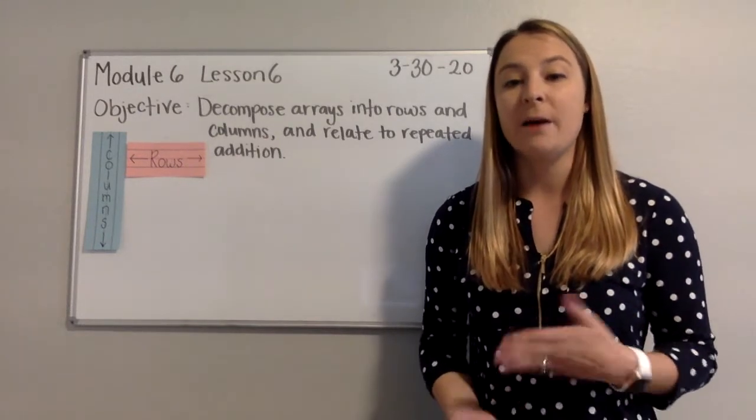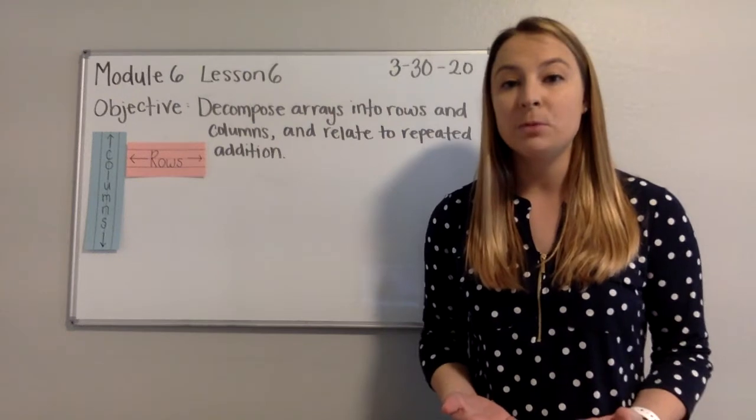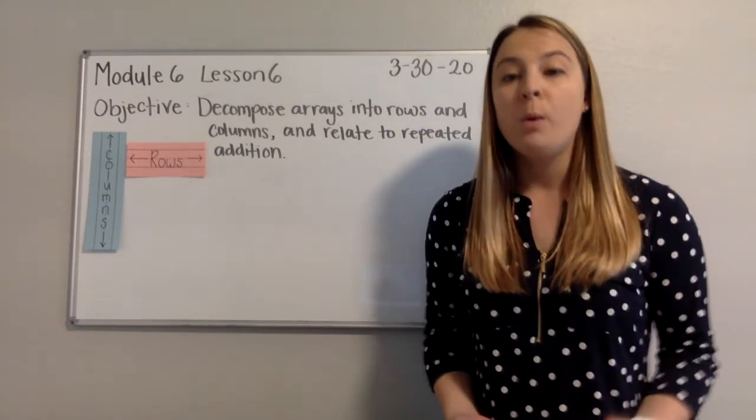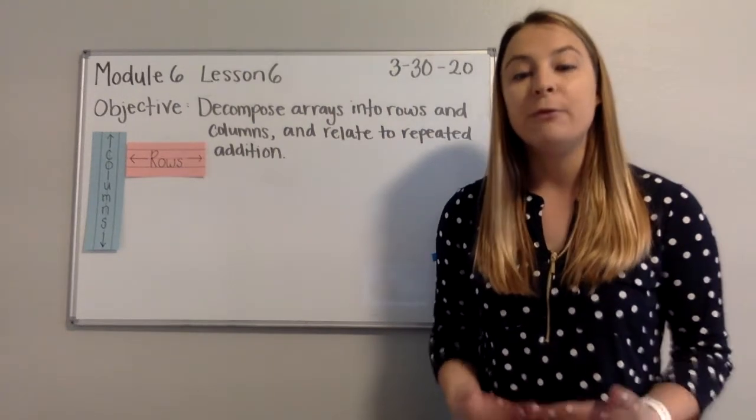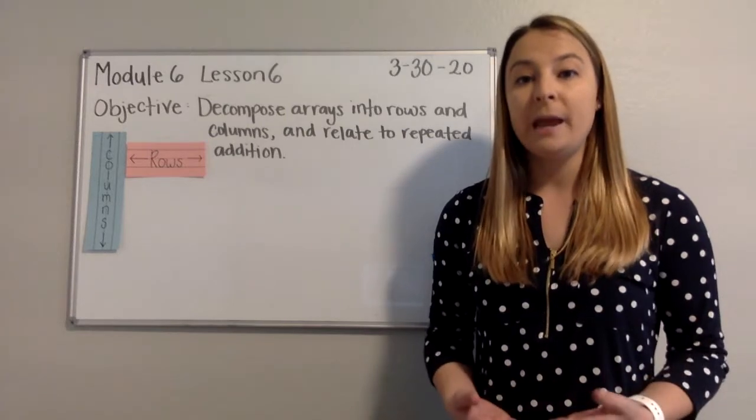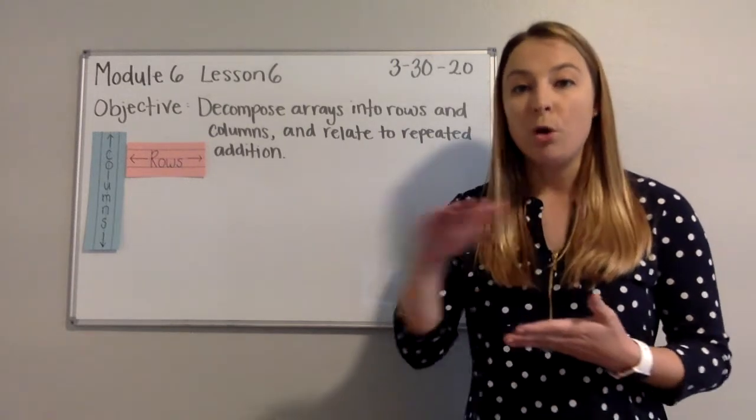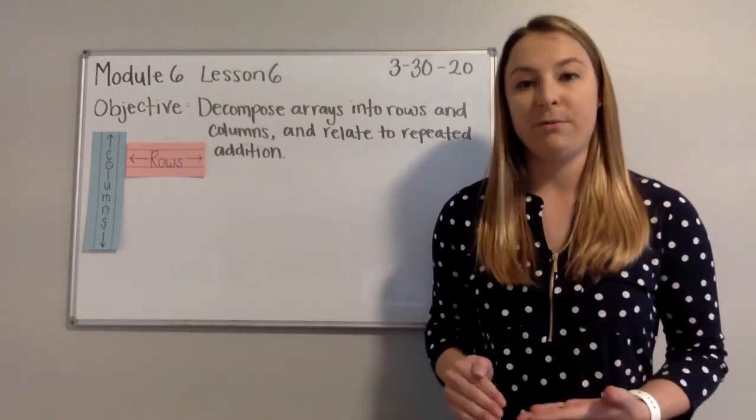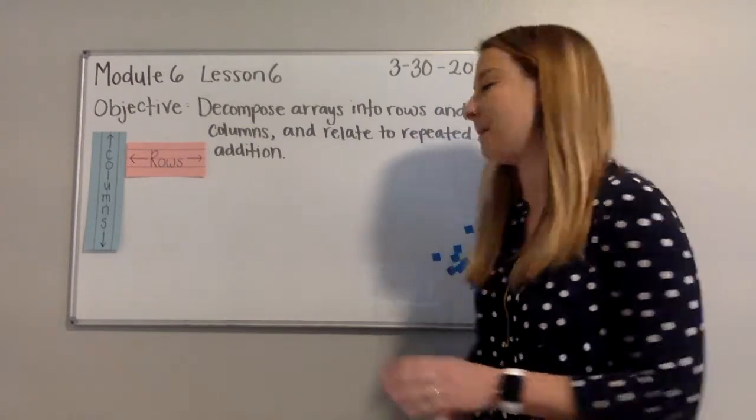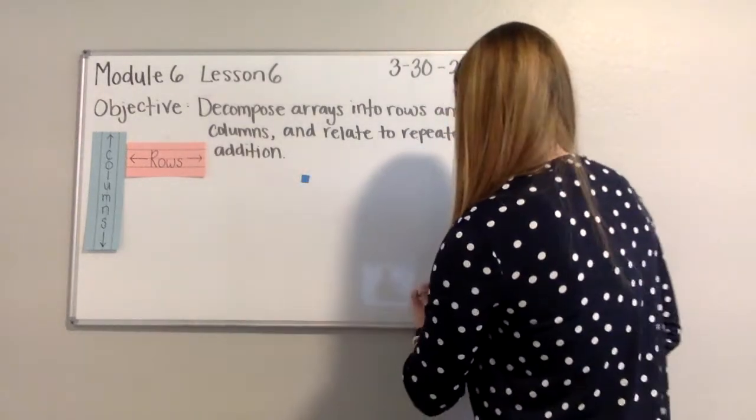If you have your manipulatives or counters to work through these examples with me, go ahead and get them out. We are going to start by making four groups of three, and our groups are going to be rows. So we're going to make four rows of three. Go ahead and do it with me as I work through this example.